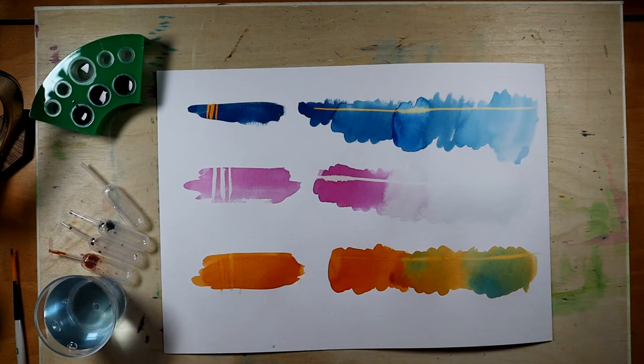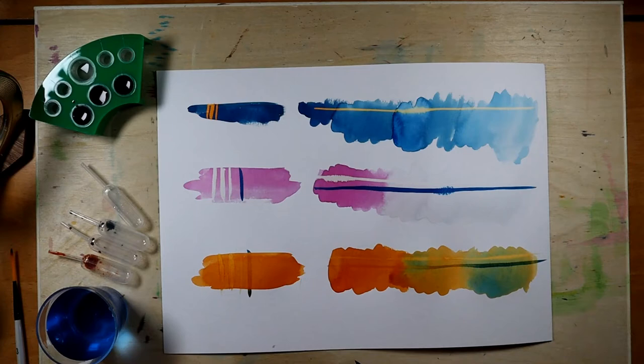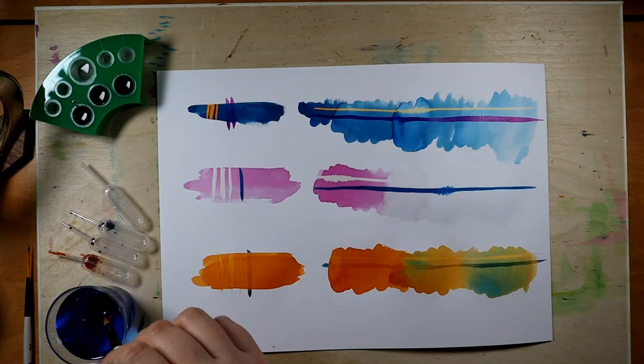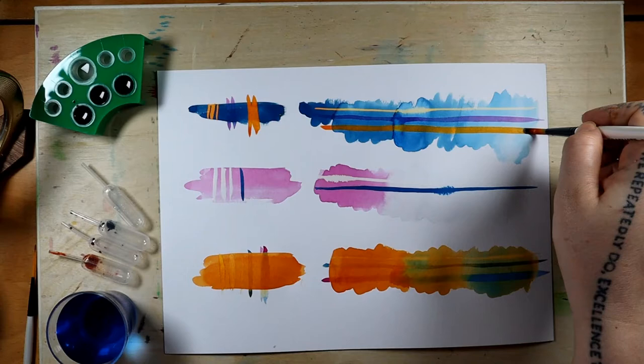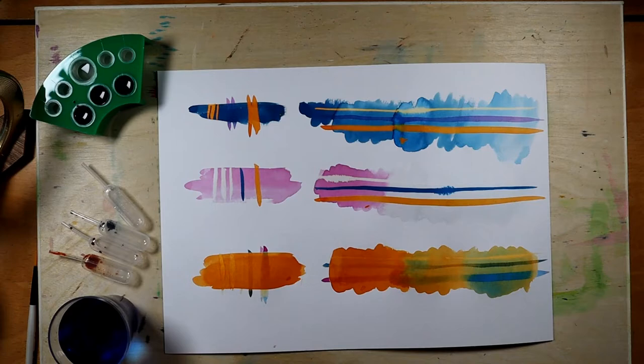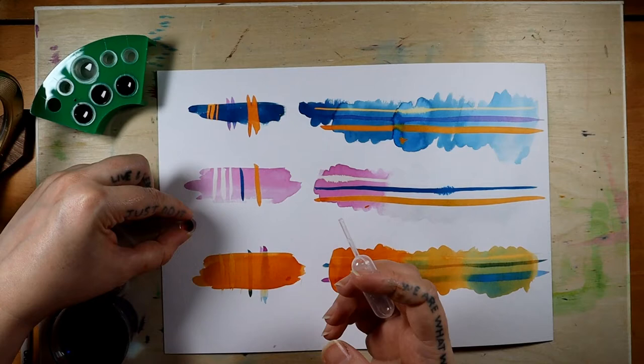So this is how the clear one looks on top of all the colors. Then I also want to see how the colors react with each other. It doesn't seem to appear on the orange. It just kind of dissipates into the background and the pink is disappearing really quickly. The orange seems to be very dominant.